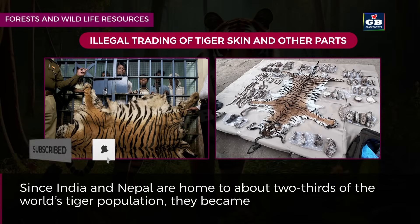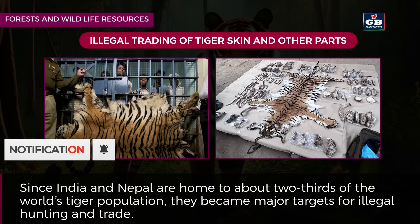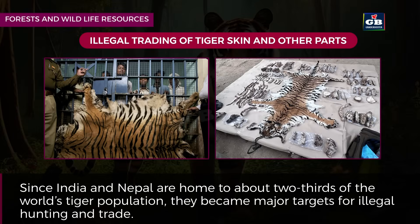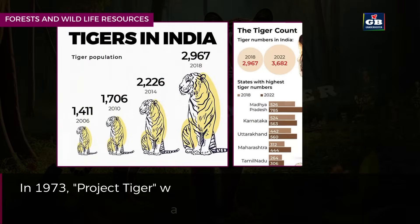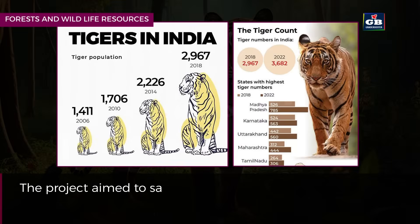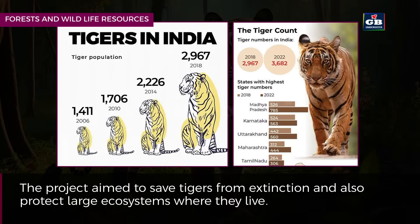Since India and Nepal are home to about two-thirds of the world's tiger population, they became major targets for illegal hunting and trade. In 1973, Project Tiger was launched as one of the most well-known wildlife conservation programs. The project aimed to save tigers from extinction and also protect the large ecosystems where they live.